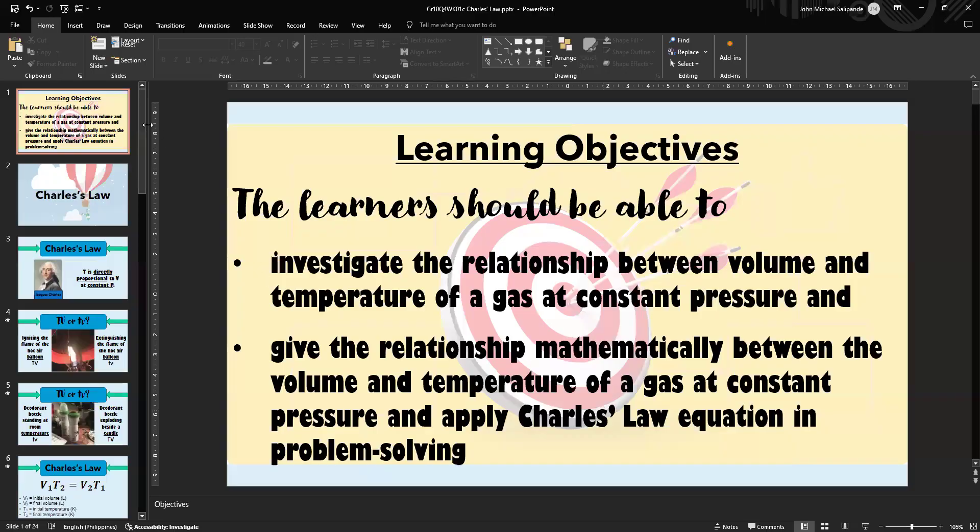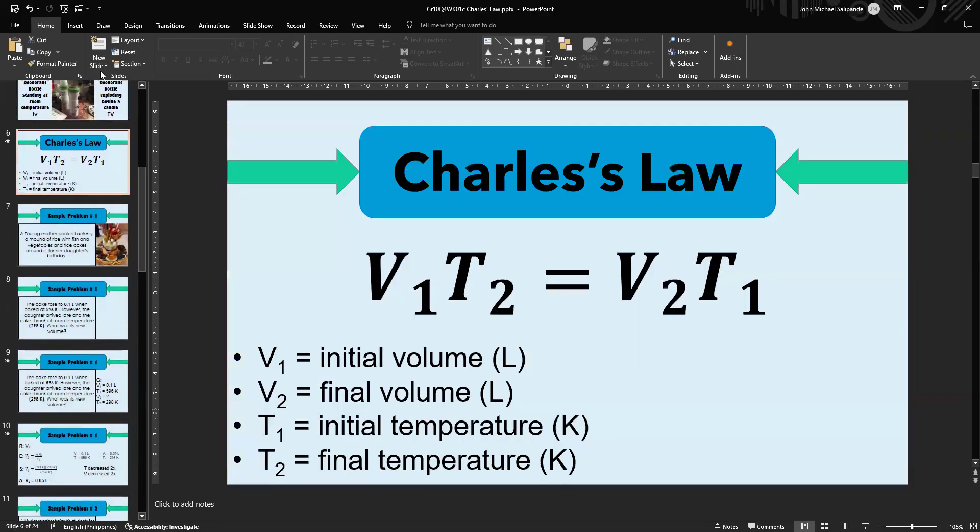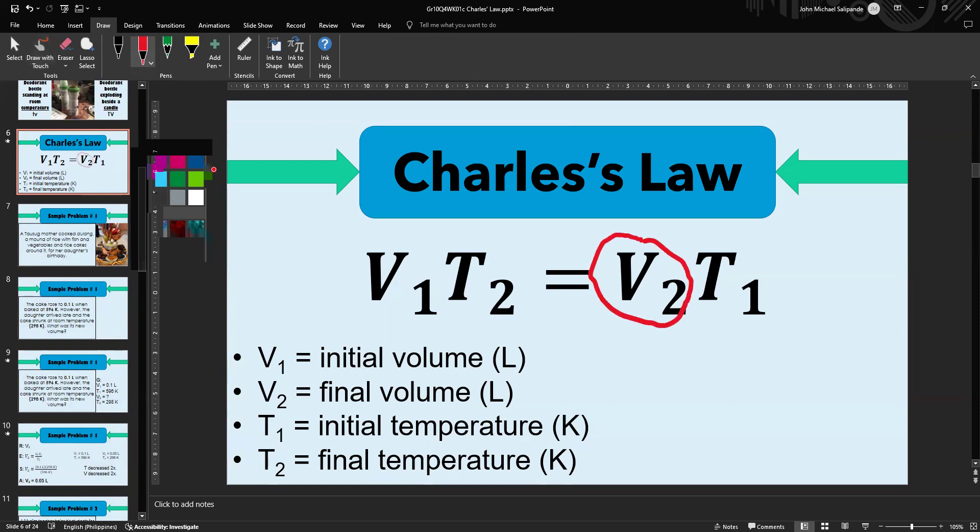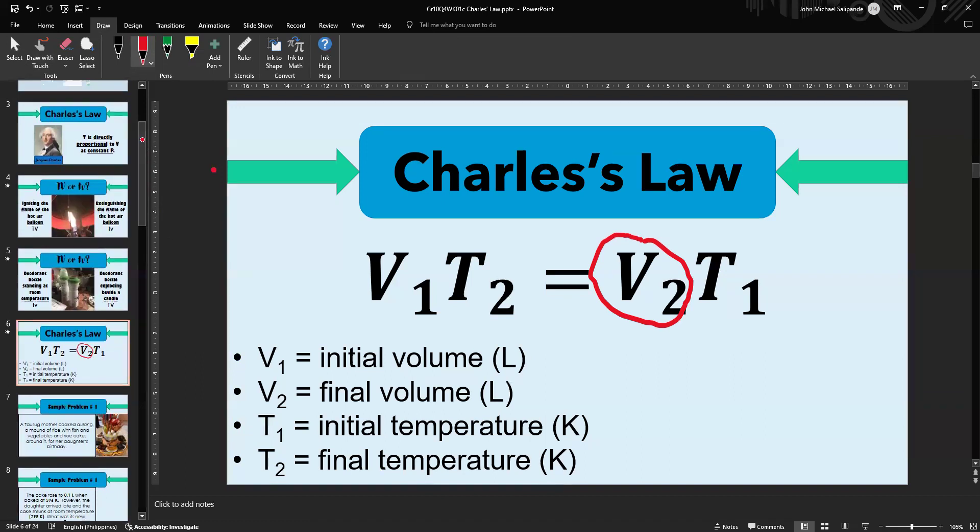Of the four variables, we'll solve for two of them. First is V₂. How do we solve for V₂? V₁T₂ = V₂T₁. V₂ and T₁ are together on the right side, and we need to isolate V₂. So we divide both sides by T₁. The T₁ on the right side will be cancelled, leaving us with V₂ = V₁T₂ / T₁. That's one formula we'll use in our sample problems.